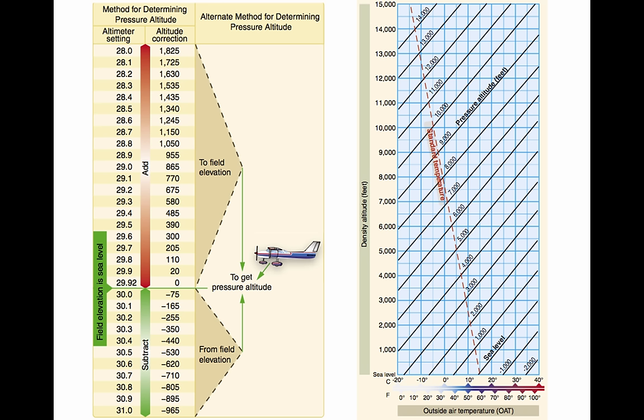Pressure altitude is important as a basis for determining aircraft performance, as well as for assigning flight levels to aircraft operating above 18,000 feet. The pressure altitude can be determined by either of two methods. One, by setting the barometric scale of the altimeter to 29.92 inches and reading the indicated altitude. Or two, by applying a correction factor to the indicated altitude according to the reported altimeter setting.